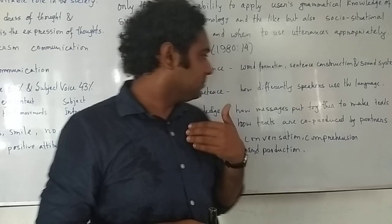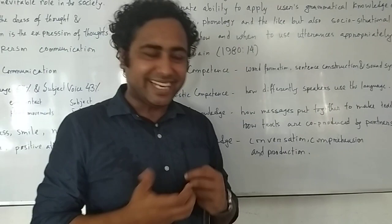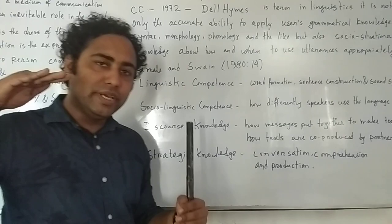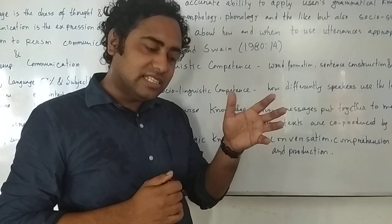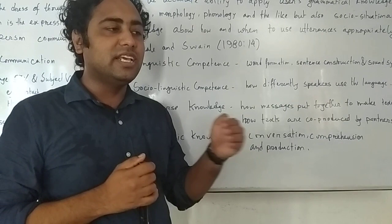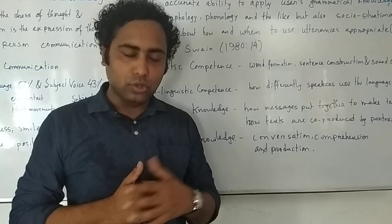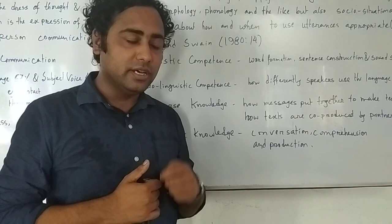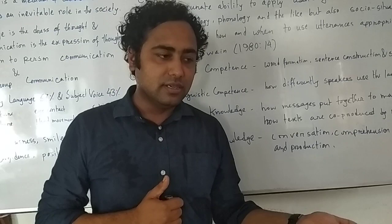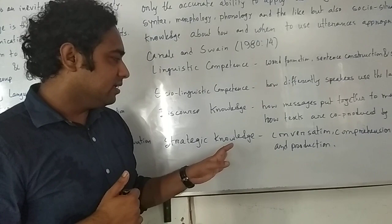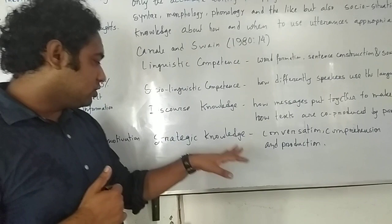Now coming to the last one: strategy competence. Strategy competence talks about the techniques to use in conversation — comprehension and production. There should be a speaker and a listener; they should talk to each other in a way so that it becomes comprehensible, understandable, and something that is possible to share and successful in communication. For example, suppose you have lost your luggage at the airport. You go to the desk and say 'Excuse me, can you help me please?' They ask 'How can I help you?' and you say 'I have lost my luggage on the last flight; here is my ticket, please help me find it.' In this way, if you notice, there is comprehension, production, and total conversation — this total technique will help you become very successful.